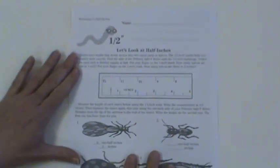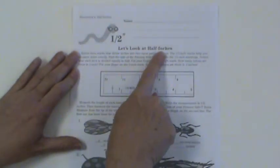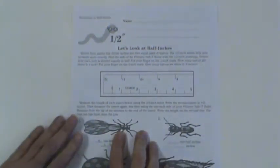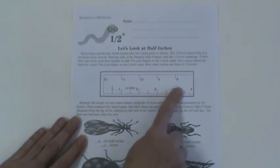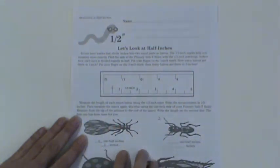The first fractional part we're going to look at is the half inch. Rulers have marks that divide the inches into two equal parts, or halves. The half inch mark helps you measure more exactly.